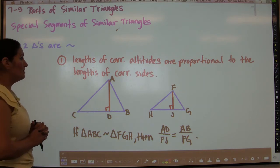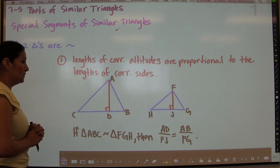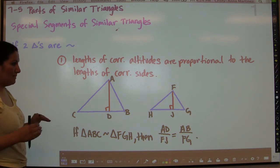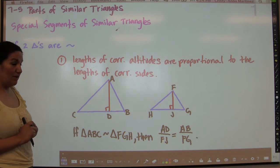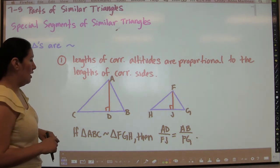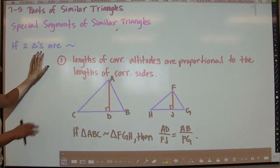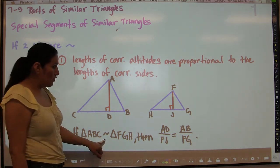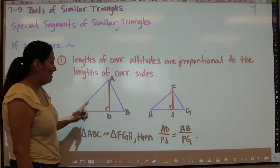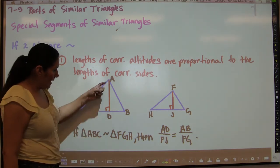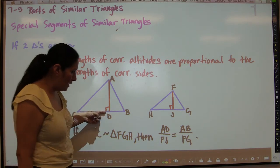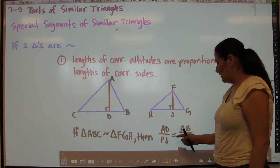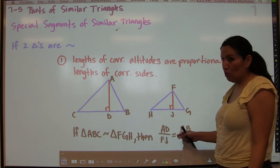The first theorem states that the lengths of corresponding altitudes are proportional to the lengths of corresponding sides. So if triangle ABC is similar to triangle FGH, then the altitudes — AD in the first triangle and FJ in the second — have a ratio equivalent to the ratio of the corresponding sides, in this case AB to FG.